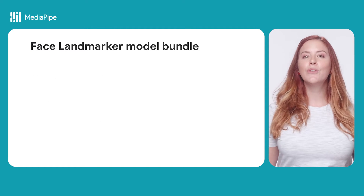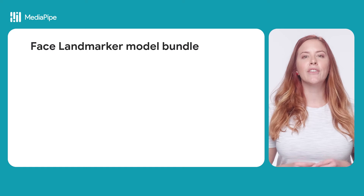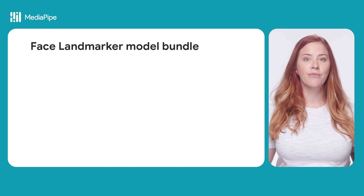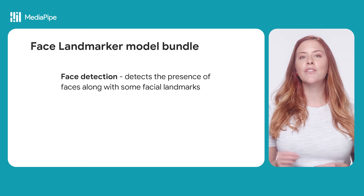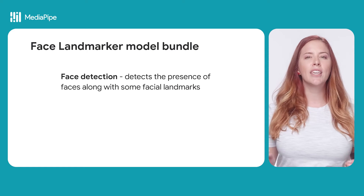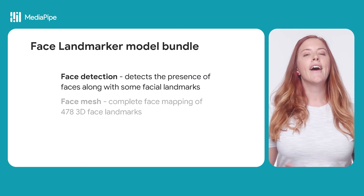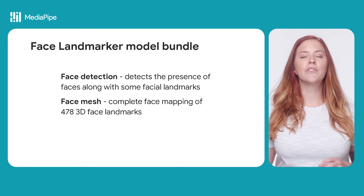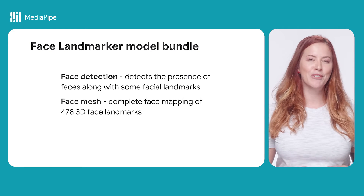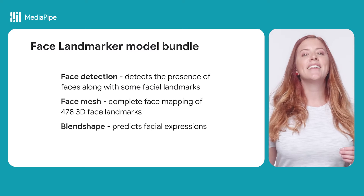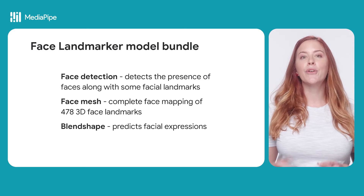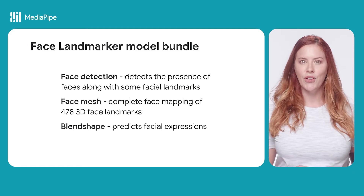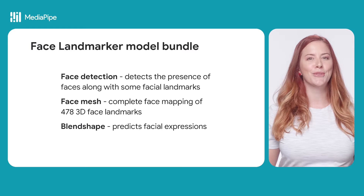The face landmarker uses a series of models to predict face landmarks. Three models are packaged together into a downloadable model bundle: a face detection model, which detects the presence of faces with a few key facial landmarks; a face mesh model, which adds a complete mapping of the face and outputs an estimate of 478 three-dimensional face landmarks; and a blend shape prediction model, which receives output from the face mesh model to predict 52 blend shape scores, which are coefficients representing different facial expressions.